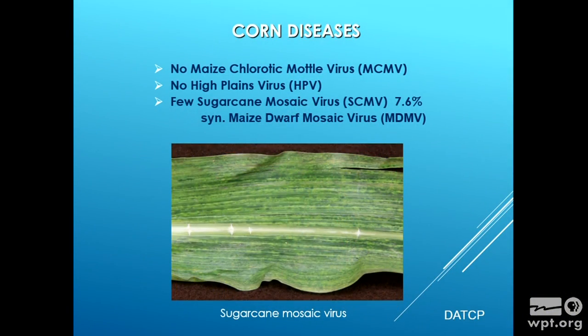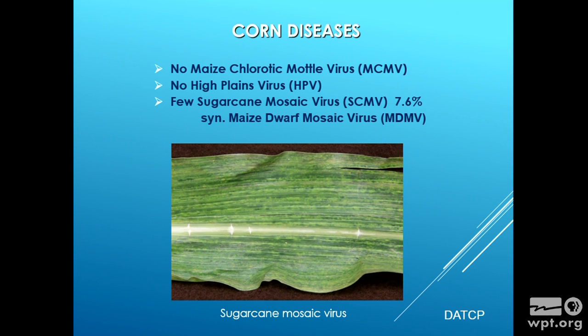Goss's wilt was up this year — found in Adams, Dane, Eau Claire, and Rock County — four counties. It's been more frequent since 2010. Those are two bacterial diseases that are sometimes a little hard to identify. We check for some viruses too. Maize chlorotic mottle virus was of concern in combination with potyvirus — it can cause a serious disease in South America and Hawaii, but not in Wisconsin. No high plains virus either. We find a few cases of maize dwarf mosaic virus, now called sugarcane mosaic virus, usually from the same spots indicating some infected seed lines.